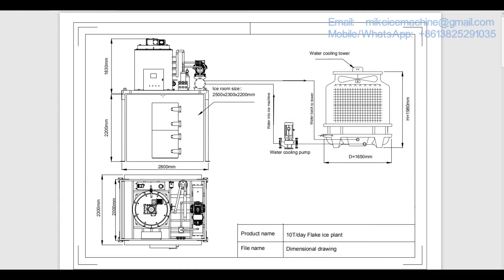Below the ice machine is the ice room. This is the ice room — it is made of heat-insulated material and stainless steel, and it can store 5 tons of ice flakes. This is the steel frame of the ice machine. It supports the ice machine and bears the weight of the machine.